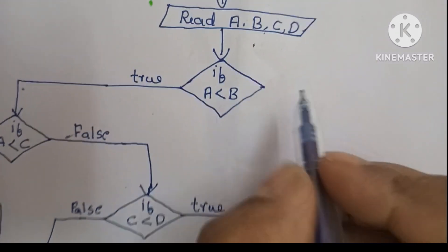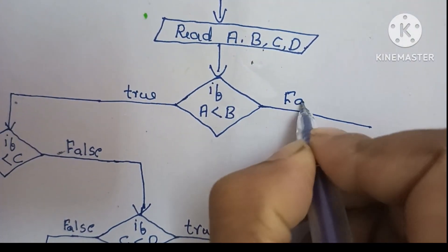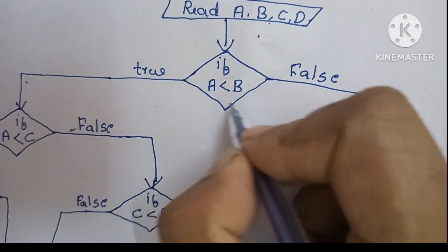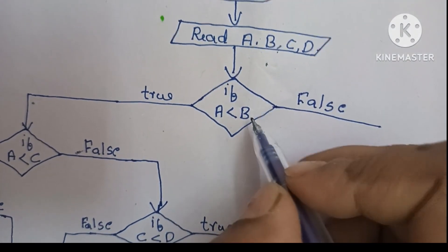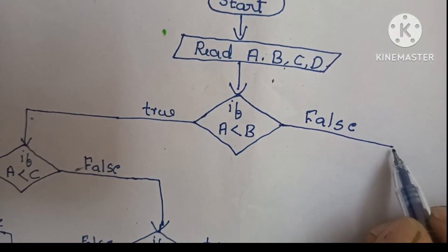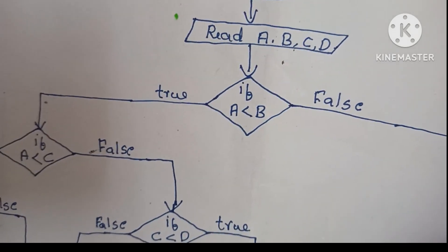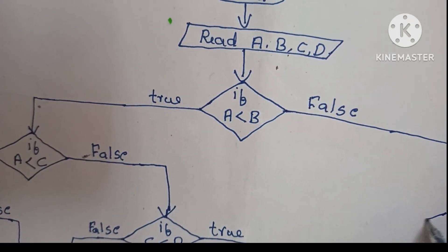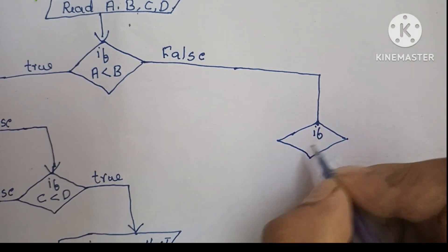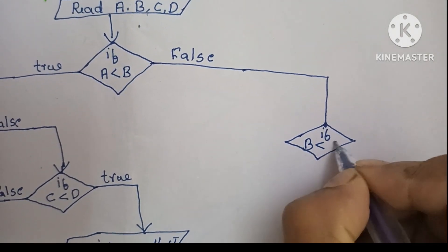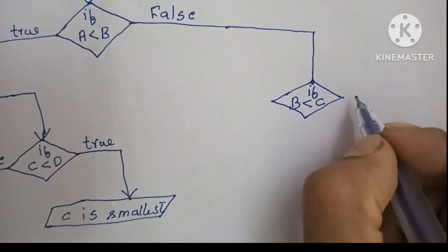If A less than B is false, then B may be smallest. Next we have to compare B with C. If B less than C and this condition is true, then B is the next candidate to compare.